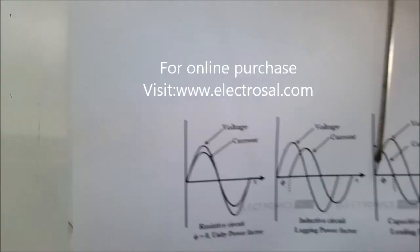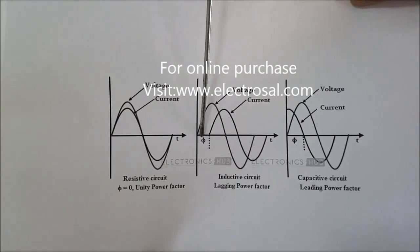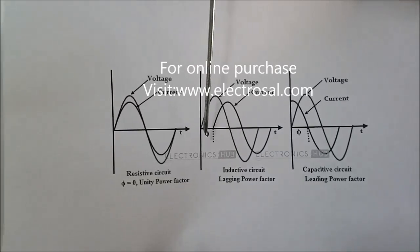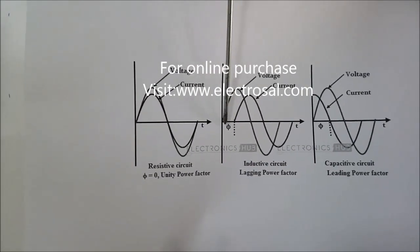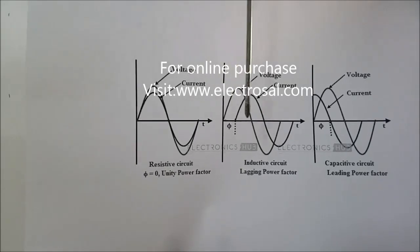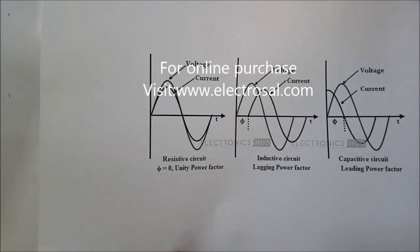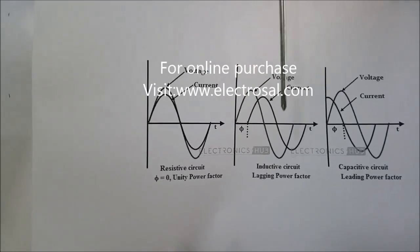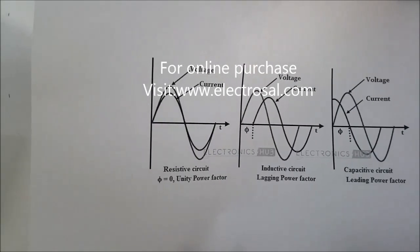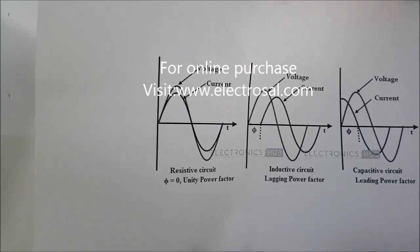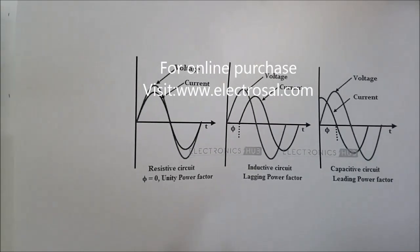Now we will see the waveform. The time difference was 3.03 milliseconds initially. The current waveform was lagging by 3.03 milliseconds, and now it has improved and shifted to 1.36 milliseconds, which means the current waveform has shifted closer to the voltage waveform.